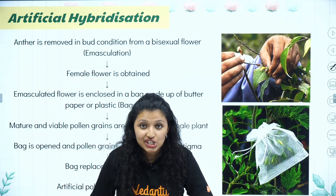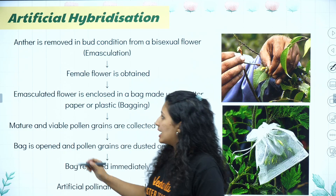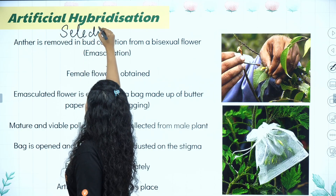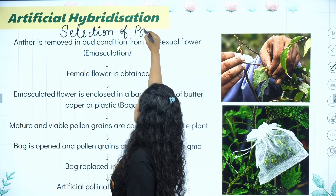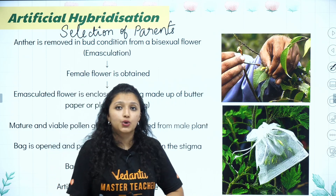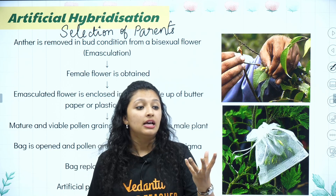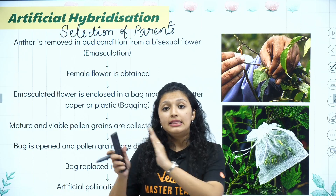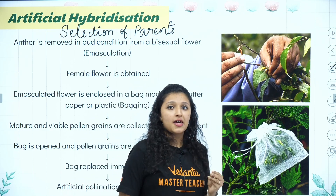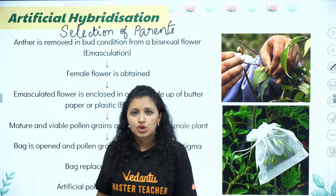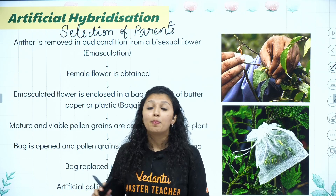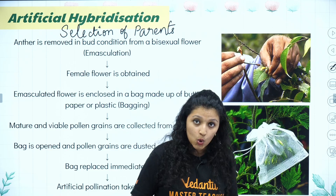The first step is selection of parents. We select which will be the female plant and which will be the male plant. For example, let's say plant A has fewer fruits but larger fruit size, and plant B has smaller fruit size but more in number. What we want is both — lots of fruits and large size. So we will try to make a hybrid that has both the good characters.